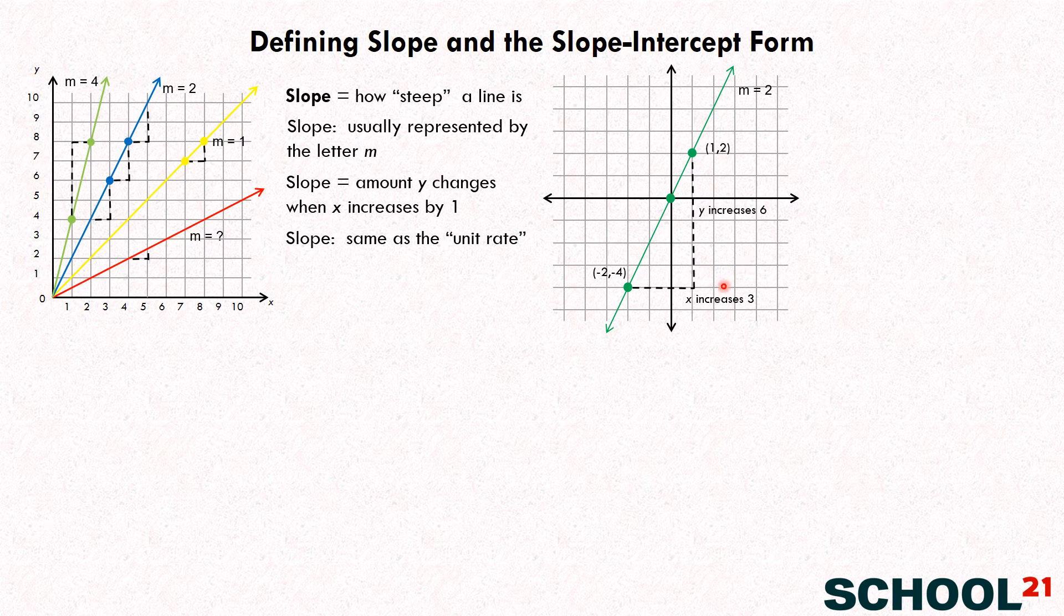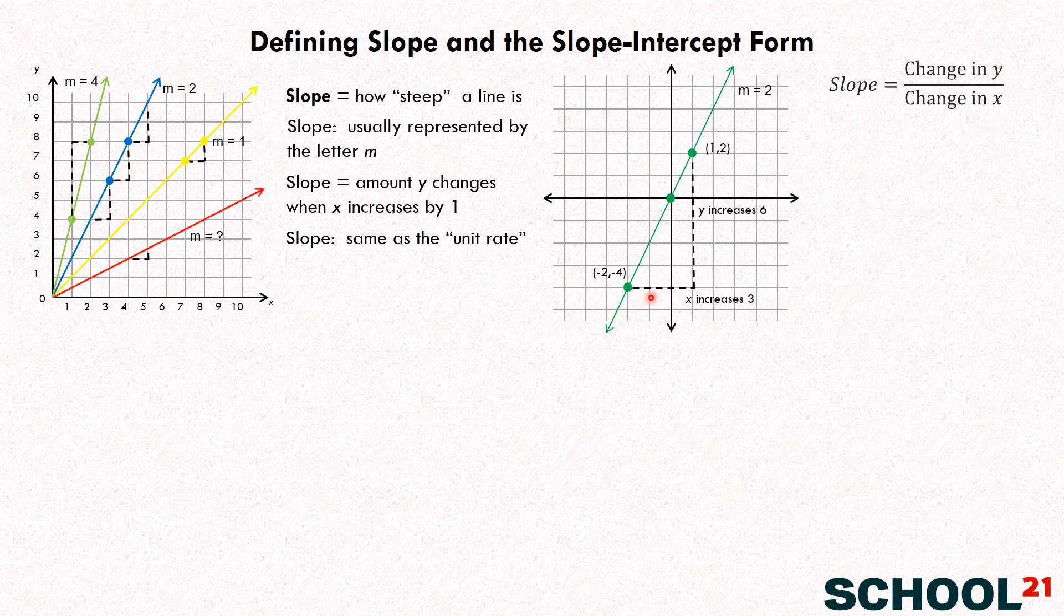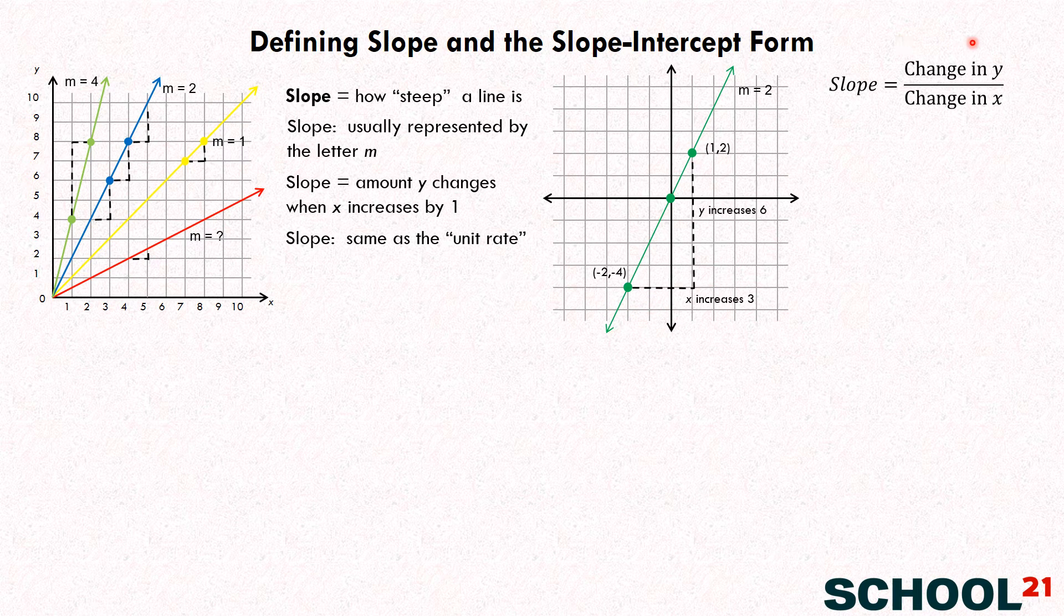So what we can do is we can say that the slope isn't just the amount that Y changes when X changes by one, but we can say a new statement over here. It's the change in Y over the change in X. So, even if the change in X isn't exactly one, we can still find the slope. So, here, the change in X is three, the change in Y is six. So, let's go ahead and write that. M equals six, the change in Y, over three, the change in X. And what's six divided by three? It's two.